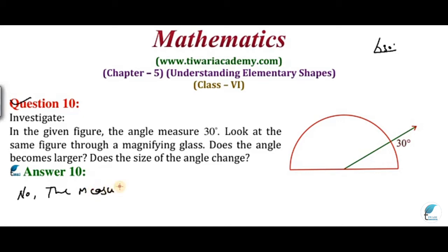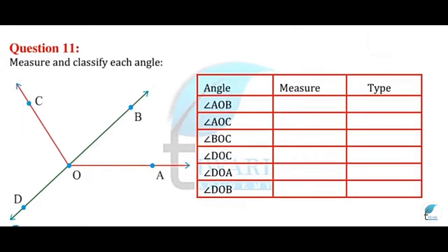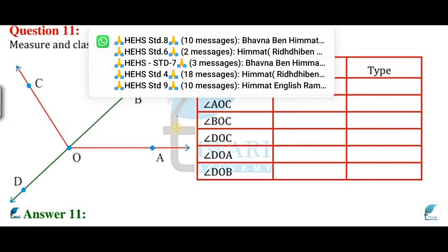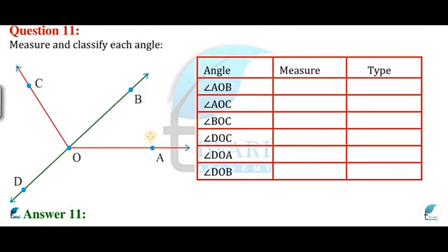Now let's talk about question number 11. We have to measure each angle and tell how many degrees it is and which type it is. If we talk about angle A,O,B — this angle is completely 40 degrees. And if we talk about A,O,C — this angle is 130 degrees. The next angle B,O,C is 90 degrees — you can see that B,O,C is completely 90 degrees.